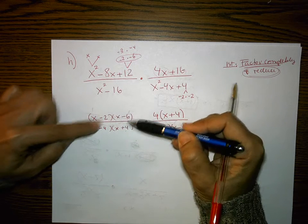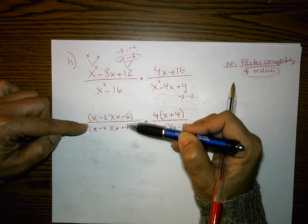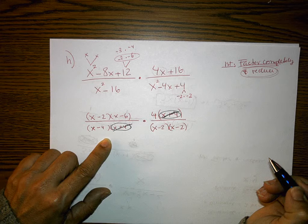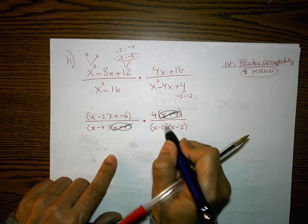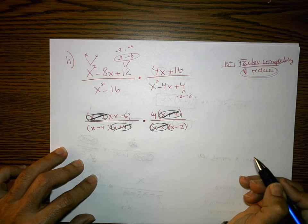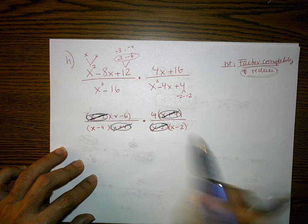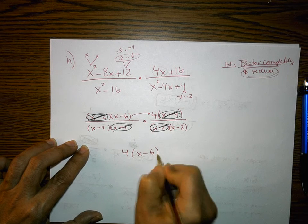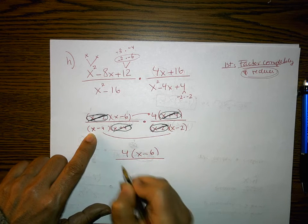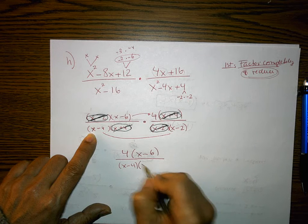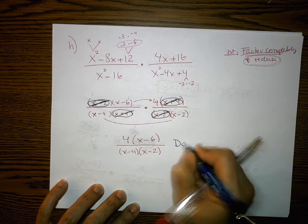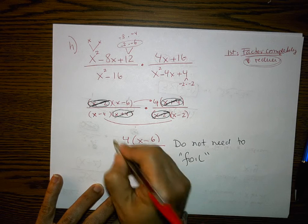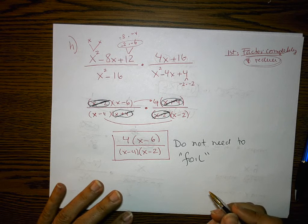Now I reduce. Horizontally: (x−2)(x−6) and (x+4)(x−2) — nothing reduces there. Vertically, I see x+4 and x+4 — those reduce. Diagonally, I see x−2 and x−2 — those reduce as well. Nothing else reduces. Now I multiply straight across: numerator times numerator is 4(x−6), and denominator times denominator is (x−4)(x−2). That is the final answer.